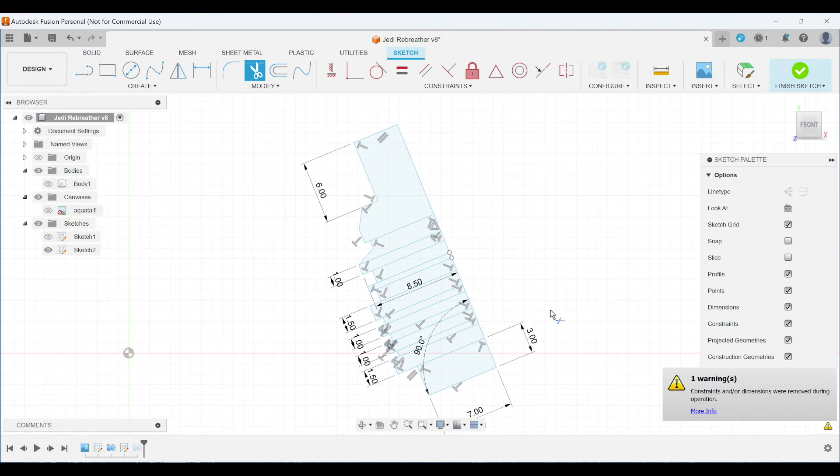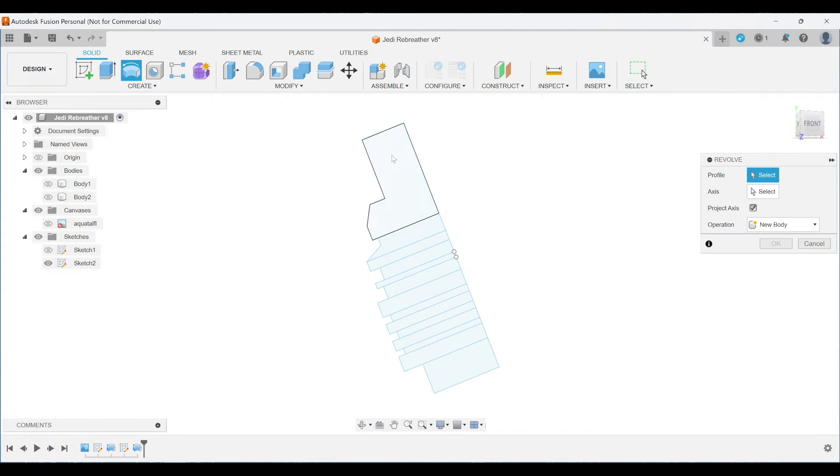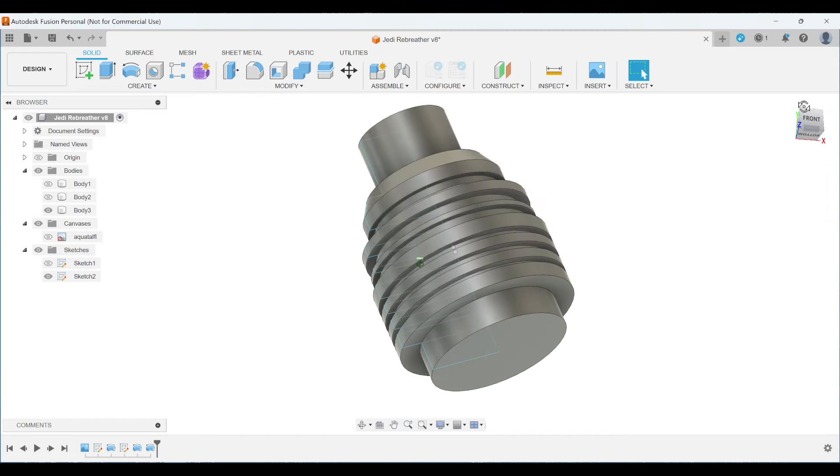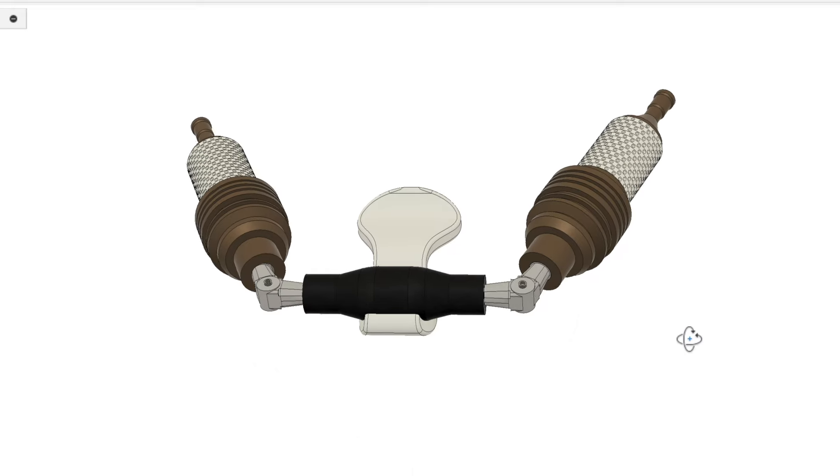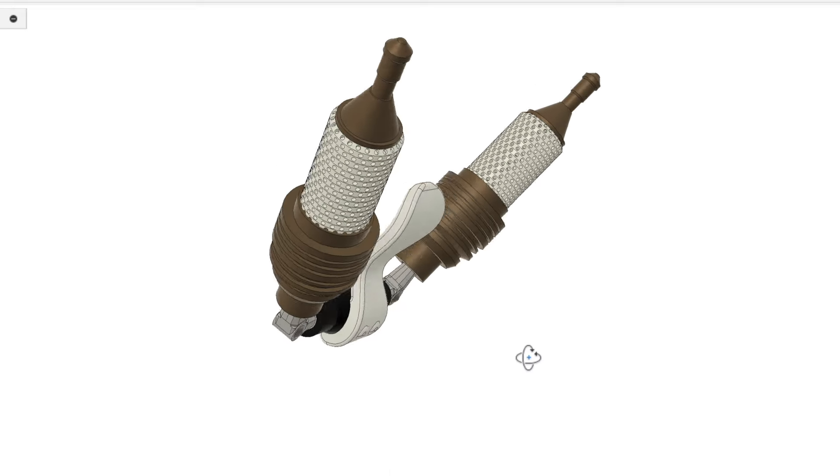Now, I actually couldn't find an existing accurate model for this era of rebreathers, so I decided to design my own. I found out the original props use these specific Robart hinges, so I picked some up to use as well as to scale the model off of for the best accuracy.